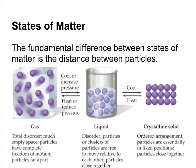In solids, they're tightly packed with only vibrational movement — the molecules themselves can't move. Because the particles are so close to each other in liquids and solids, those are called the condensed phases. At whatever pressure and temperature you're dealing with, the state of matter of a substance depends on the kinetic energy of those molecules. The lower the kinetic energy of a molecule, the more likely it's going to be a liquid or a solid.